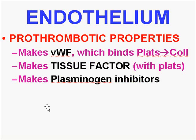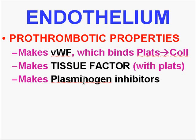When endothelium is disrupted physically, chemically, or by other factors, it has prothrombotic properties. One of those is to make von Willebrand's factor, which binds platelets to collagen — that's already the beginning of your platelet plug. It also makes tissue factor, which is the direct compound involved with platelets, and besides platelets making tissue factor, endothelium does it as well — so we're talking about the beginning of coagulation and the whole direct scheme of the coagulation cascade. In addition, it makes plasminogen inhibitors, which inhibit the things that want to dissolve fibrin, making it prothrombotic.